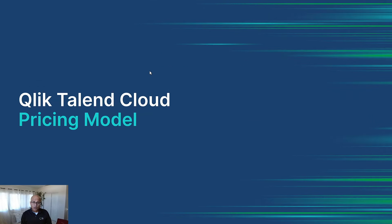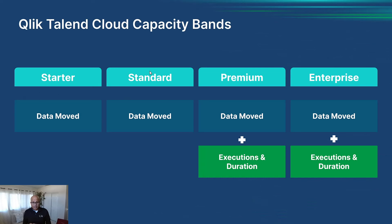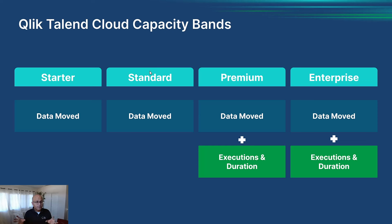Let's now look at the pricing model itself. All four editions are based on a capacity model. Capacity, at its simplest, is a model where you sign up for a certain minimum quantity of product usage, and if you need more, you can buy incremental capacity on top of that. We deliver that capacity in terms of capacity bands. There are two types of bands: one pertaining to data movement, and another pertaining to the advanced capabilities around data quality, API integration, and application integration — denominated in terms of executions and duration.